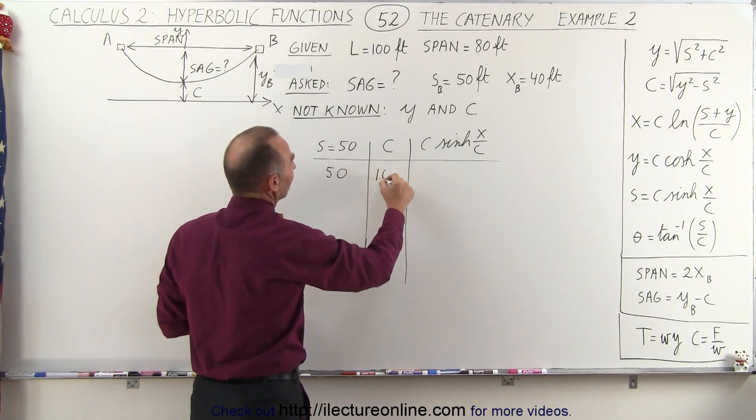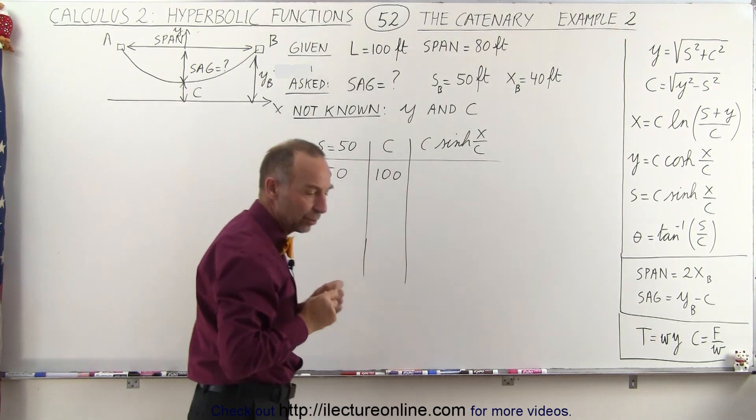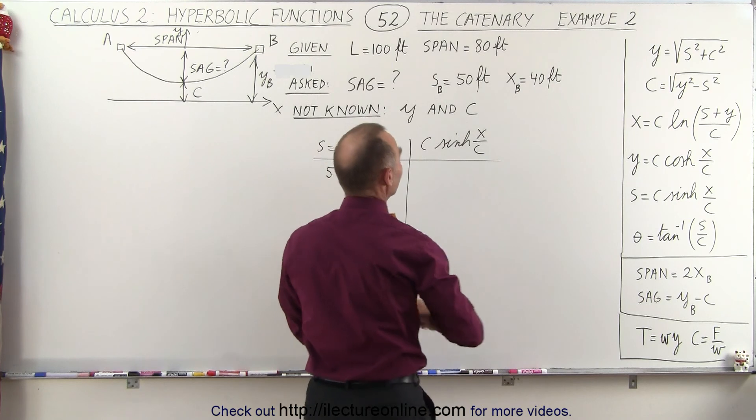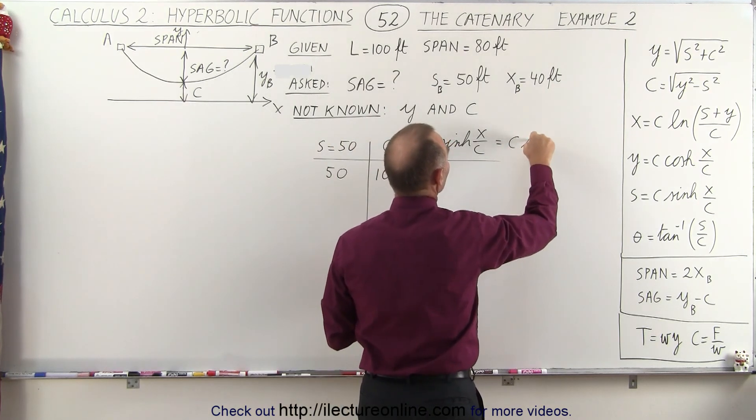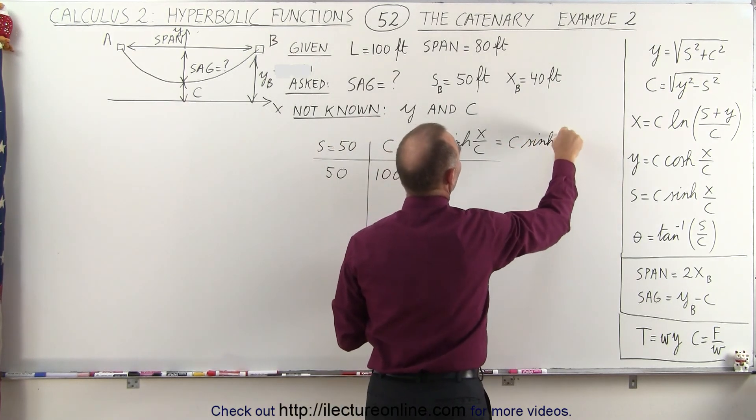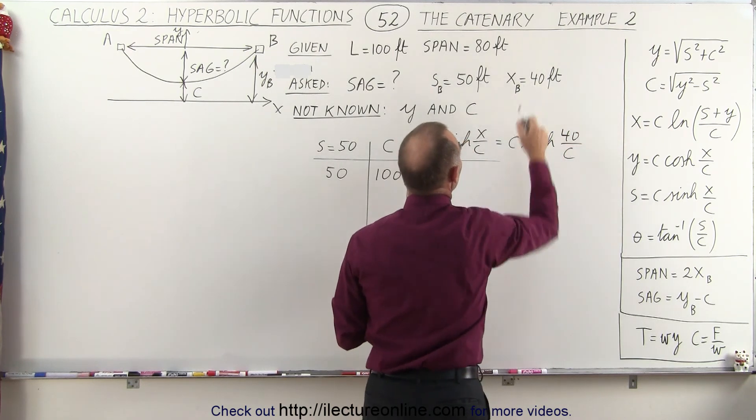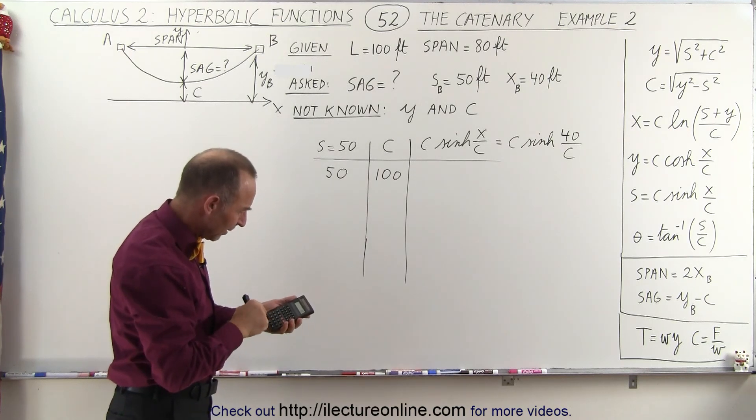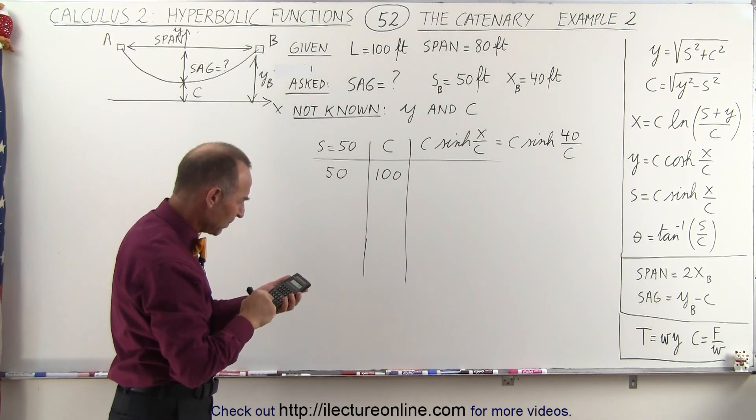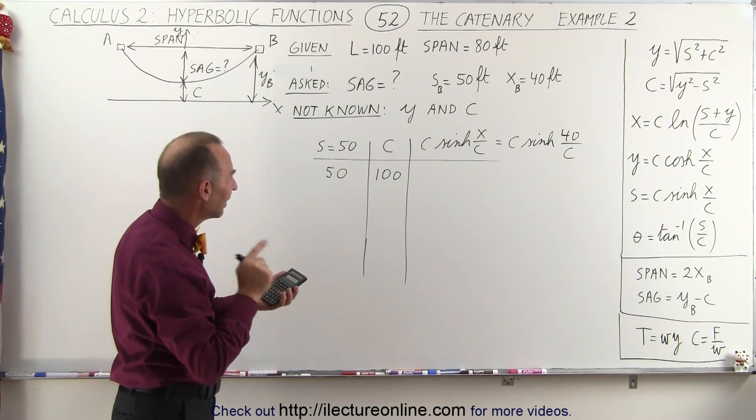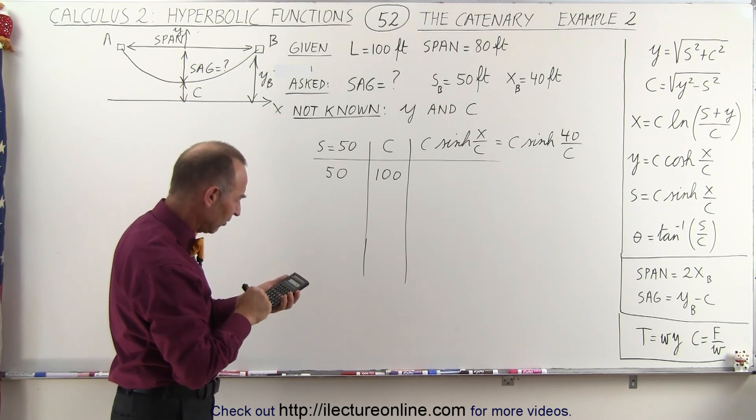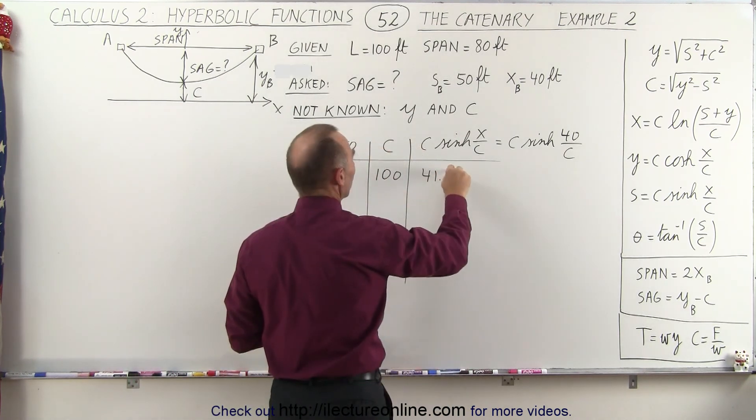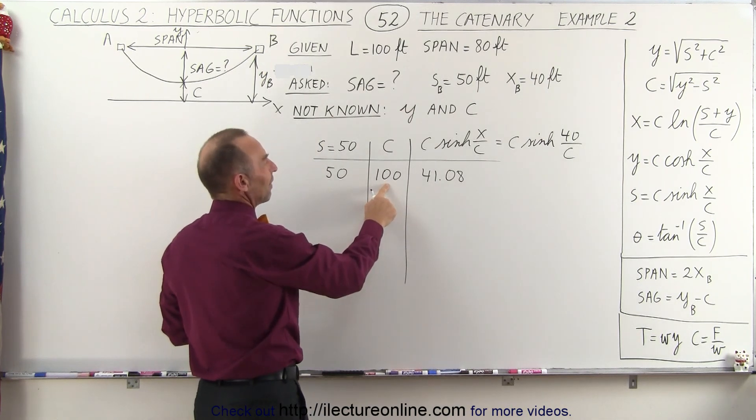We're going to start out with let's say let c equal 100 and see what happens. So now what you do is you take this value right here so you realize that this is equal to c times a hyperbolic sine of 40 over c since x sub b is already known. So we're going to take 40 divided by the value that we picked for c. We take the hyperbolic sine for that and then we multiply that times c and we get 41.08. So it looks like we didn't quite pick the right value.